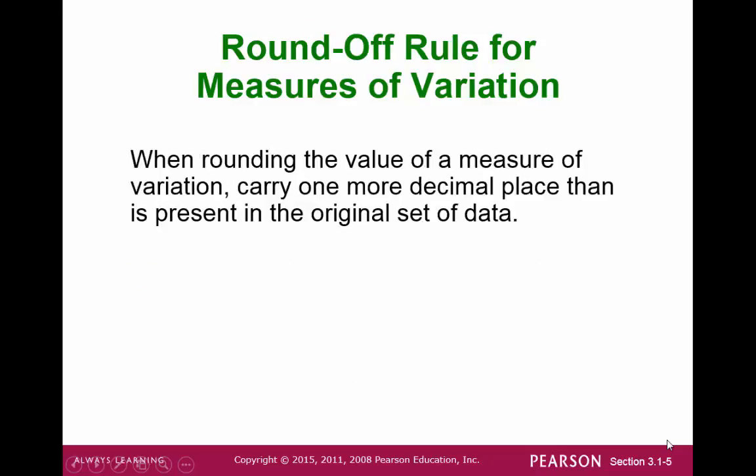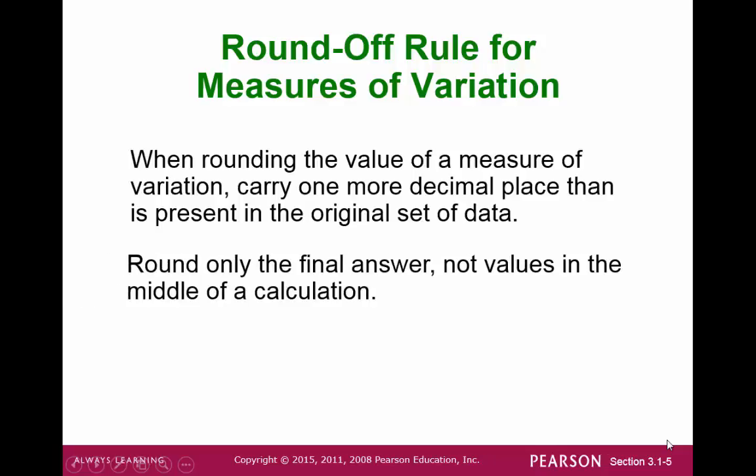The round-off rule for variation is the same as the measure of center, which is one decimal place past the original dataset. Be careful when computing values — we want to round off the final answer. Do not round off the intermediate results in your calculations because it may make your final answer less precise.